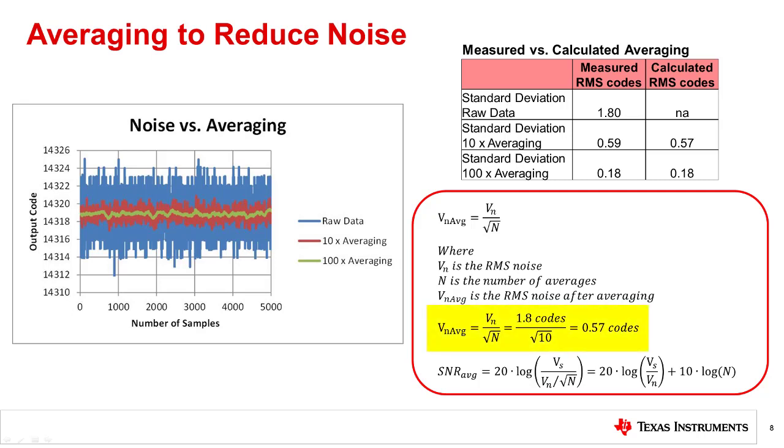The averaged noise is taking the 1.8 codes of un-averaged noise and dividing by the square root of 10, which yields 0.57 codes of RMS noise after averaging. A 10-point rolling average was done on the ADC data, and the standard deviation of the average data was calculated to be 0.59, so the effect of averaging on the actual measured data very closely matched the predicted noise by dividing by the square root of n. Then, a similar experiment was done with a 100-point rolling average, and both the calculated and measured average correspond quite well, reducing the noise to about 0.18 codes RMS.